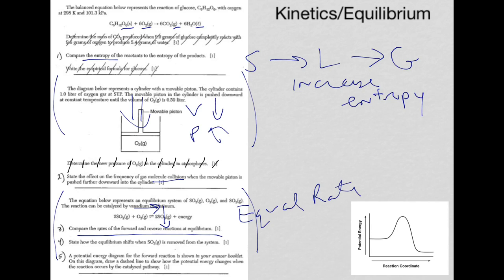And finally, in question five, the potential energy diagram for the forward reaction is shown in the answer booklet. I copied and pasted it here. It says on this diagram, draw a dashed line to show how the potential energy changes when the reaction occurs by a catalyzed pathway.